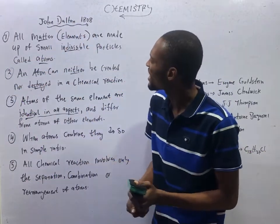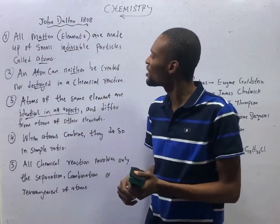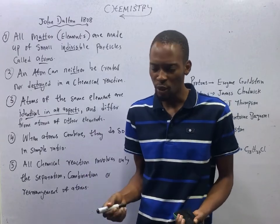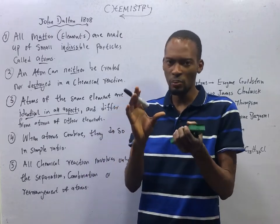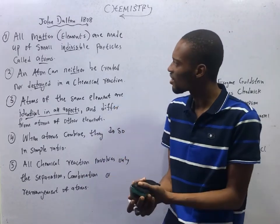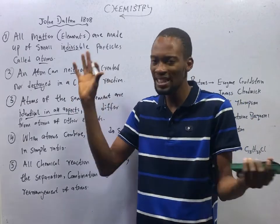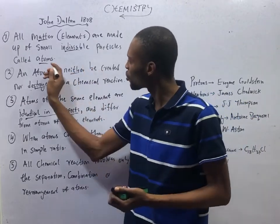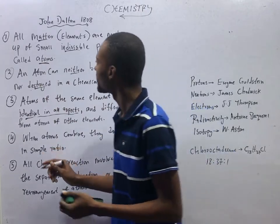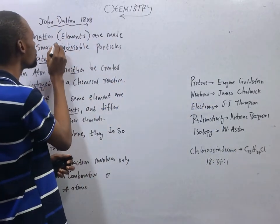The first one says, all matter are made up of small, indivisible particles called atoms. This is partially true in the sense that, all matter, all elements, everything around, they are made up of atoms.